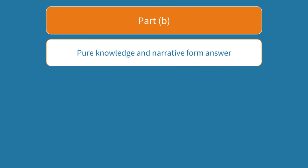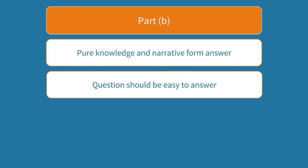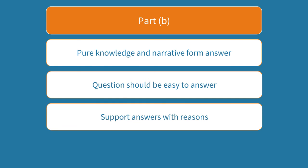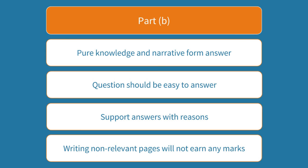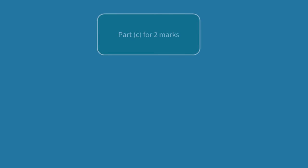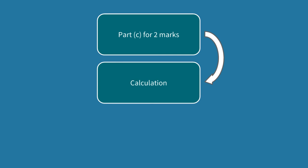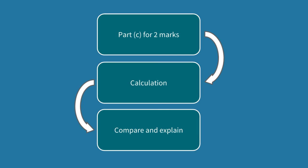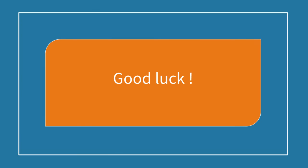For part B this was pure knowledge — you will either know the answer or not. If you've studied hard and revised well a question like this should be nice and easy. Remember to give your answer and then support it with a reason for full marks. Don't get carried away writing pages and pages because it's only worth 2 marks. For part C, again only 2 marks, so you had a calculation to do before explaining your advice. We compared our calculation to the answer in part A and chose the lower option and explained why. All the best for the rest of your revision and good luck for the exam.